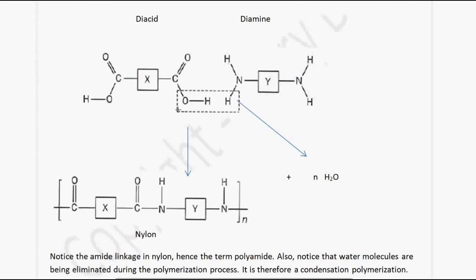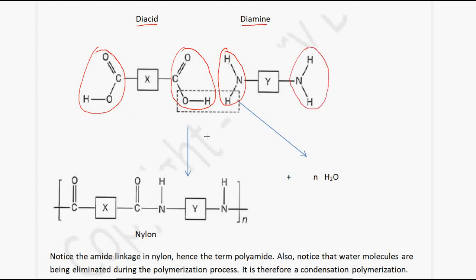Looking at how nylon is formed: we start with a diacid with two acid groups and a diamine with two amine groups (NH₂). The OH from the acid and the H from the amine are eliminated to give a water molecule. Water is eliminated and we get the amide bond — or amide linkage — being produced.